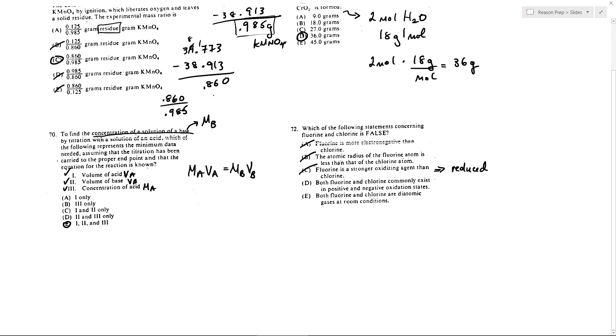Both fluorine and chlorine commonly exist in positive and negative oxidation states. It is possible for chlorine to be positive. Not common, I wouldn't say. I mean, how do you define common? But regardless of that, fluorine is never going to be positive, or at least not commonly for sure. So D is false. So D looks like it's going to be the answer.